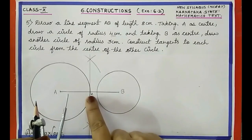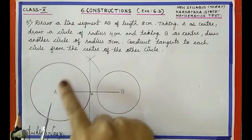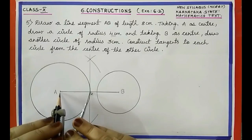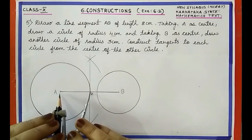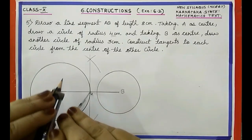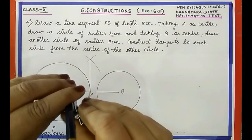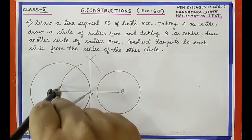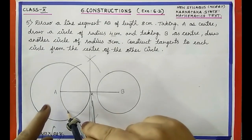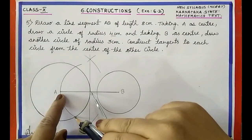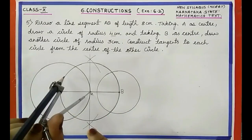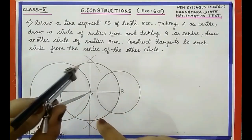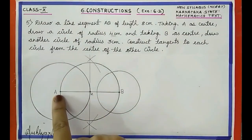Now with M as center we have to draw a circle with radius equal to AM. This circle passes through both point A and point B. I have drawn the circle with center M and radius equal to AM.